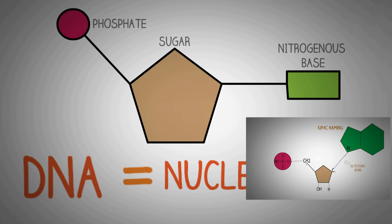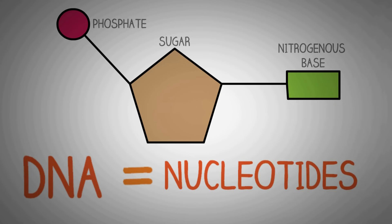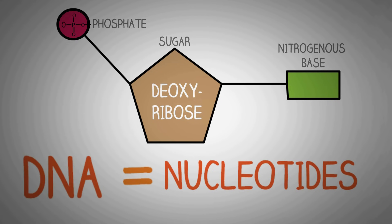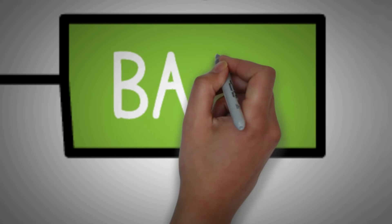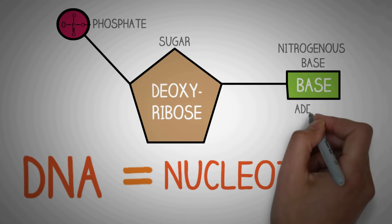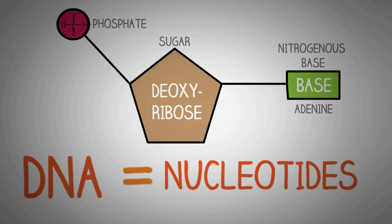In a nutshell, the sugar present inside the nucleotide is called deoxyribose, which is a five-carbon sugar belonging to the pentoses. The phosphate group consists of a phosphorus ion to which four oxygen atoms are attached. Then we have the nitrogenous bases, which are organic molecules containing nitrogen in the form of ringed structures.